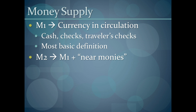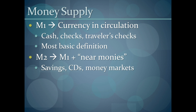M2 is going to be all of M1 plus what are called near monies — things that could be converted into cash quickly and easily. M2 generally includes savings accounts, because you can't use a savings account to buy anything directly; you have to transfer money to a checking account first. It also includes certificates of deposit, which is money you put in the bank for a contractually agreed period that you can't access until the time is up. And there are money market accounts, which are like a CD in that there are limited withdrawals, but like a checking account in that you can write a check against them — because of the limited withdrawals, they fall under M2.